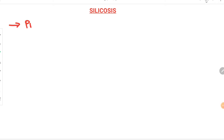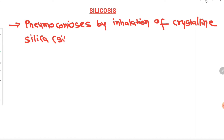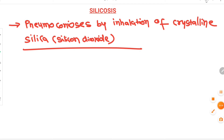Hello everyone, myself Dr. Parth Goswami. Among the four-part series on pneumoconiosis, today we are going to discuss part 3, that is silicosis. Silicosis is a pneumoconiosis that occurs by inhalation of crystalline silica, also known as silicon dioxide. Inhalation of it leads to development of silicosis pneumoconiosis.